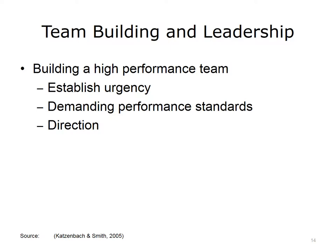When building a team, team leaders need to be cognizant of approaches likely to result in high performance. According to Katzenbach and Smith, these approaches include establishing urgency, demanding performance standards, and direction — it is important to let team members know that the work of the team is critical and valuable, and they need to know the standards and expectations for the team. The more critical and meaningful the justification for the team's work, the more likely the team will meet its performance potential.